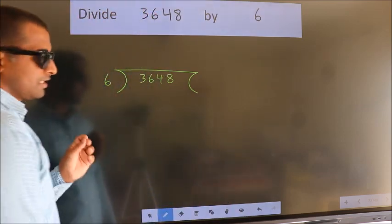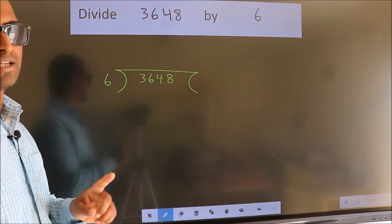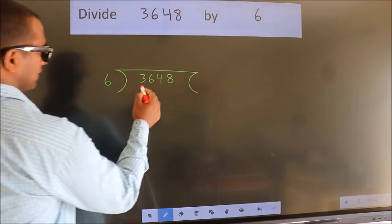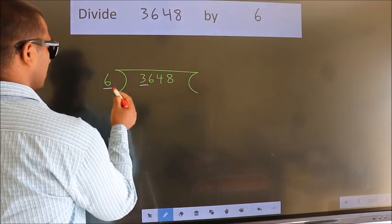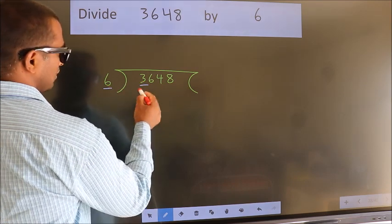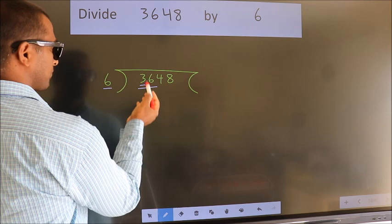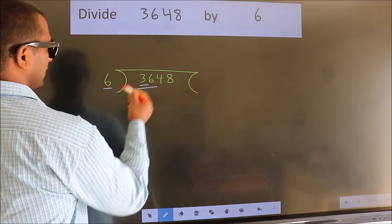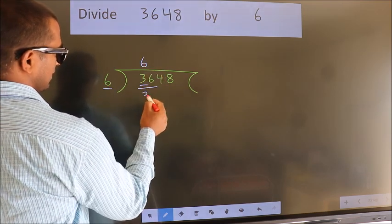This is your step 1. Next, here we have 3. Here 6. 3 is smaller than 6, so we should take 2 numbers: 36. When do we get 36? In the 6 table. 6 times 6 is 36.